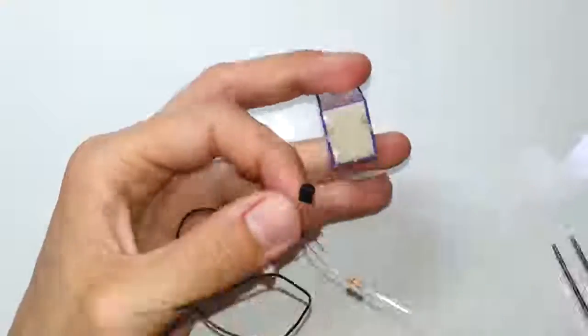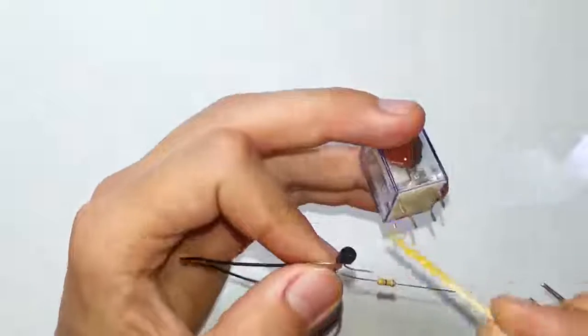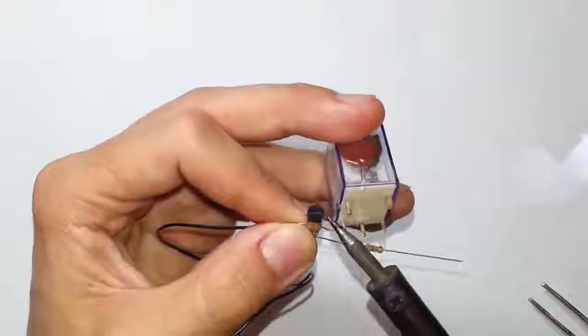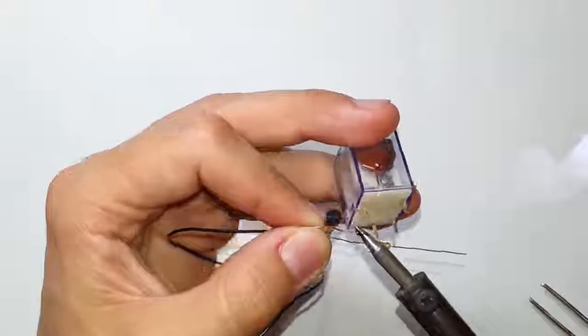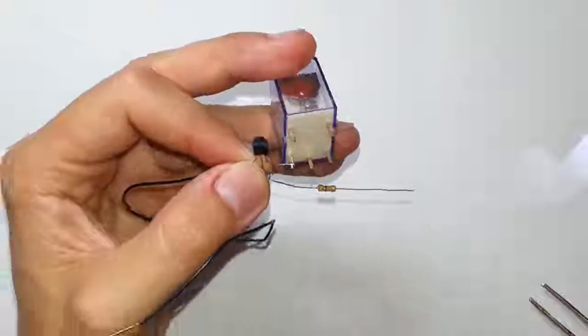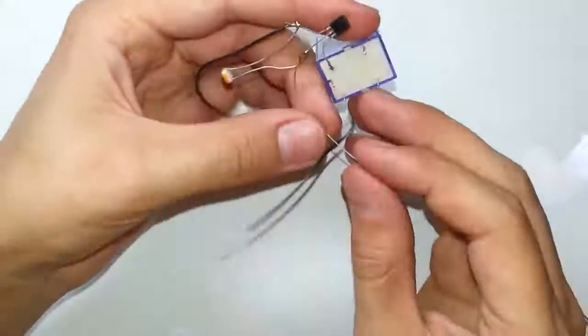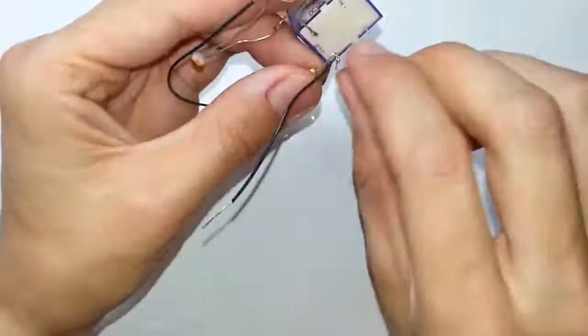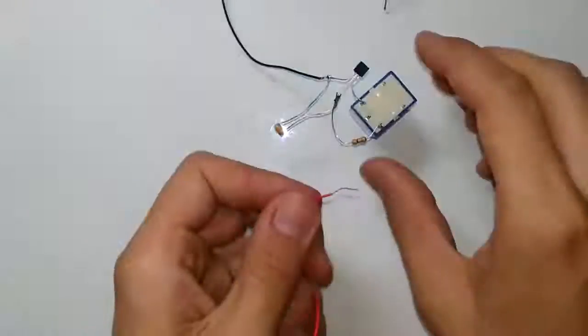Now let's solder drain lead of the transistor to the first coil lead of the relay. After that let's solder the red wire to the resistor and to the second coil lead of the relay.